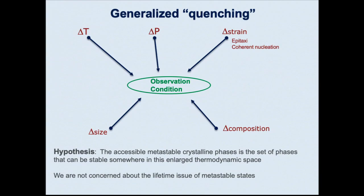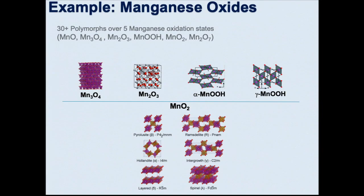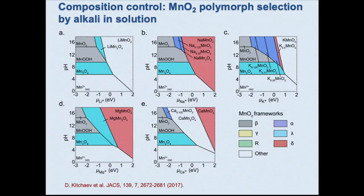I'm going to talk mainly about the non-temperature, non-pressure variables. Here's a simple example: the polymorphs of MnO2. MnO2 has a ton of polymorphs — pyrolusite, ramsdellite, hollandite, birnessite layered phases, spinels — roughly all at the same composition. Can you understand their stability? You can, because they are often grown in alkaline solution. If you look at phase diagrams of pH versus the chemical potential of an alkaline solution, most of these phases — hollandite, birnessite, ramsdellite — actually appear somewhere on those phase diagrams. The idea is that they are grown or at least nucleated with the alkali, and then continue to grow as the alkali gets oxidized out.